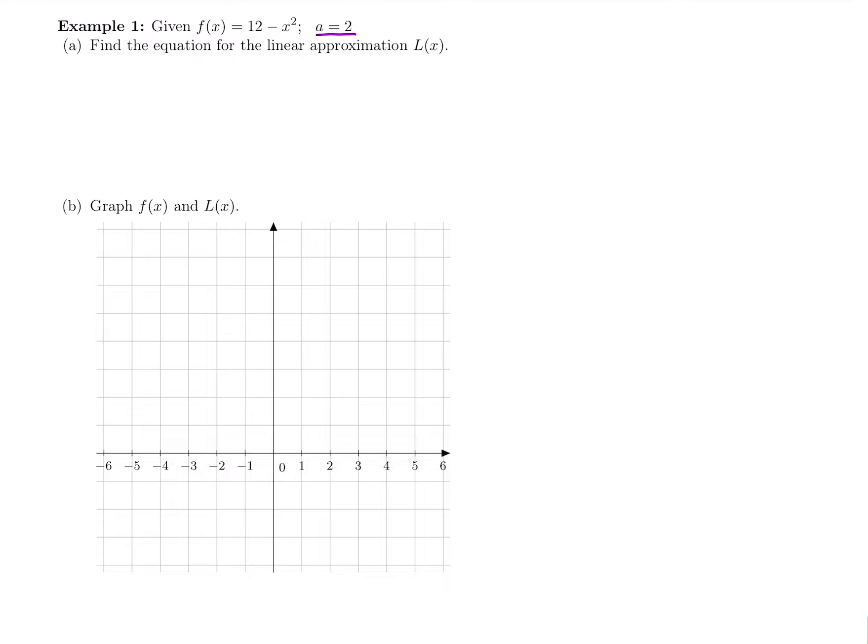Starting with our linear approximation, we have our equation from the previous video: L(x) is f(a) plus f'(a) times (x minus a). And we're going to do that in three steps each time. So first step is to figure out the first piece here, this f(a).